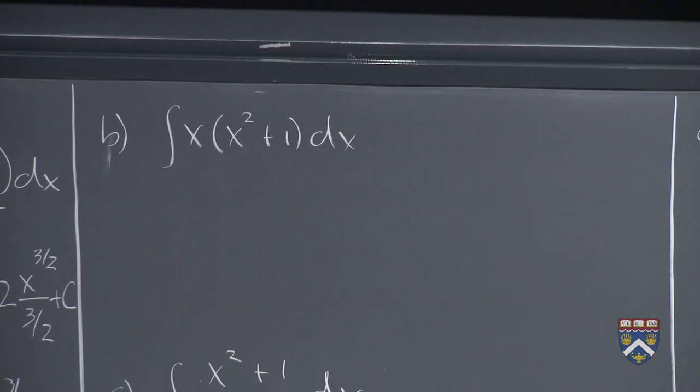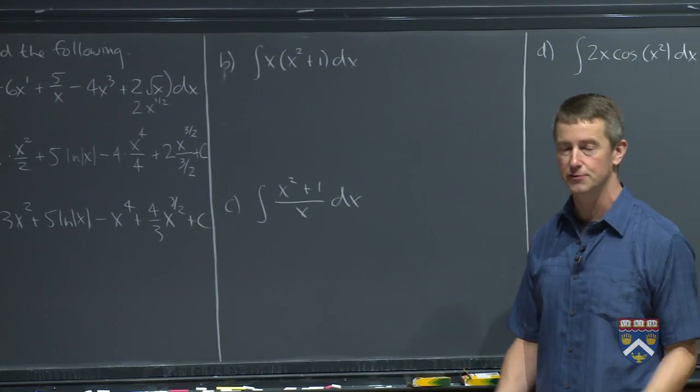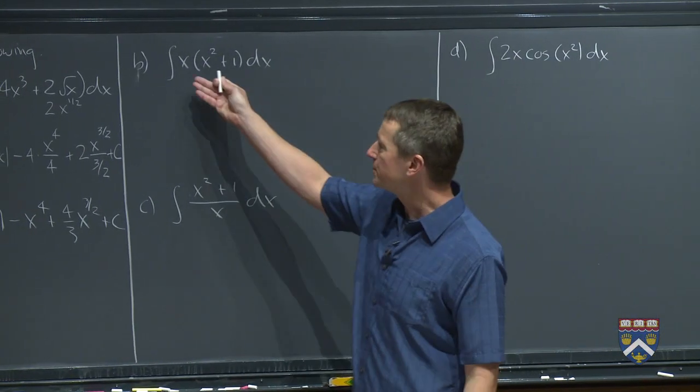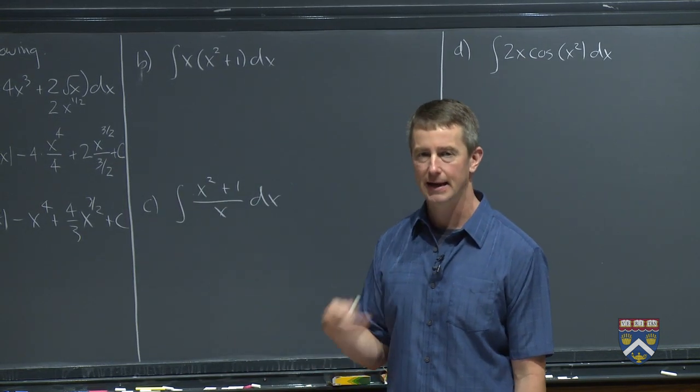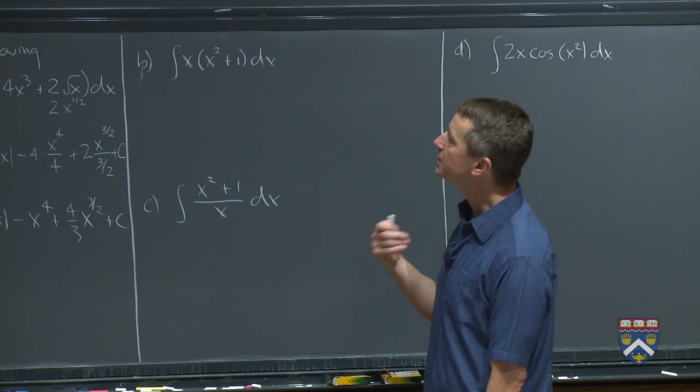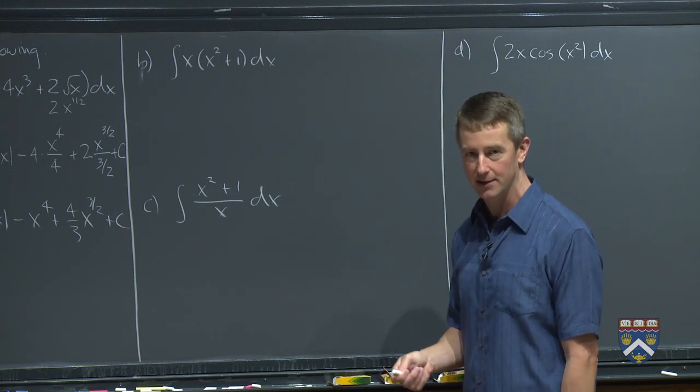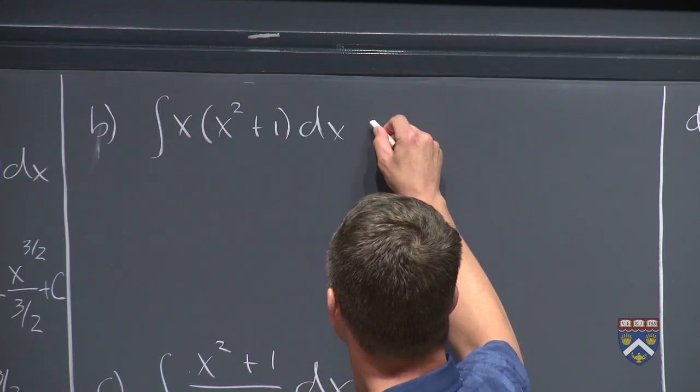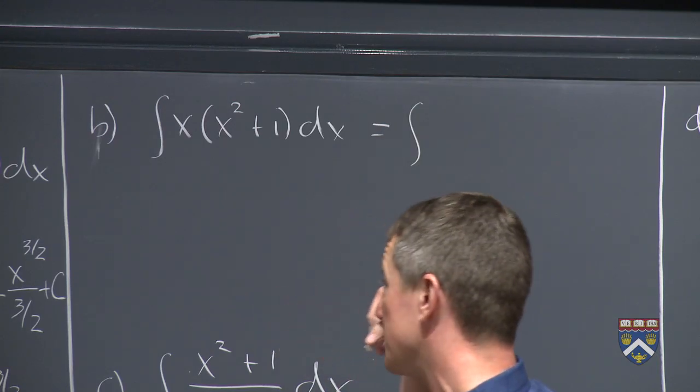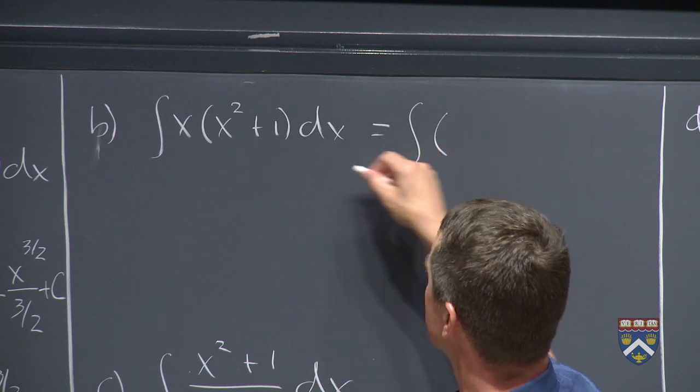Here, what's the new thing here? We have two functions multiplied together, two functions of x. So we can't use any sort of thing to pull this x out front because this x is not a constant. It's only constants that we can pull out front. And we don't have a so-called backwards product rule yet. That's a Calculus 2 topic that you'll study next semester.